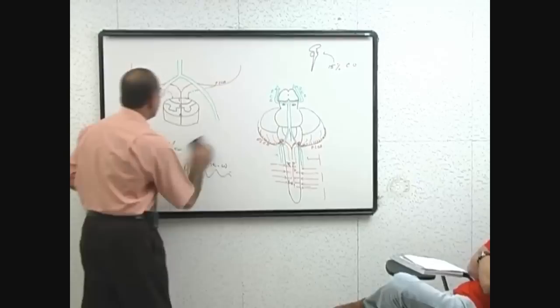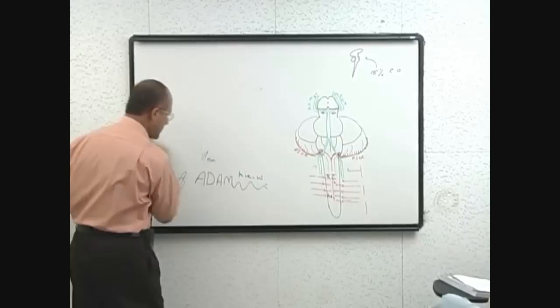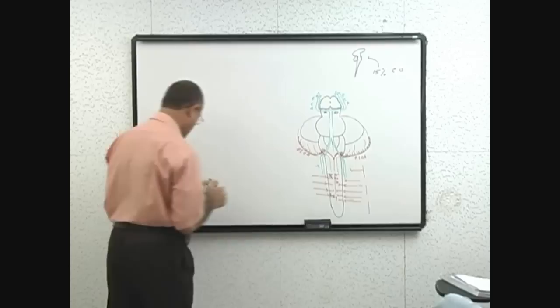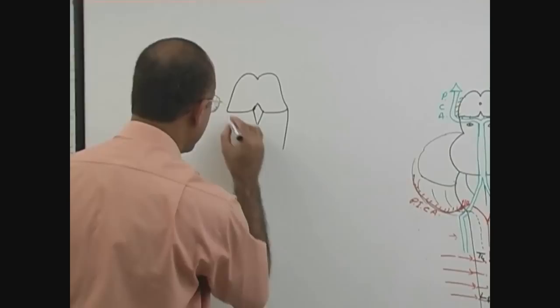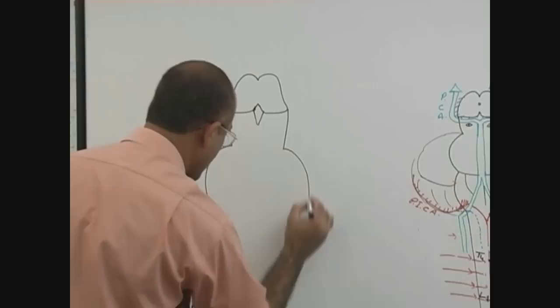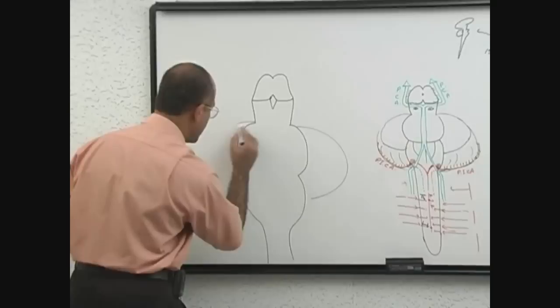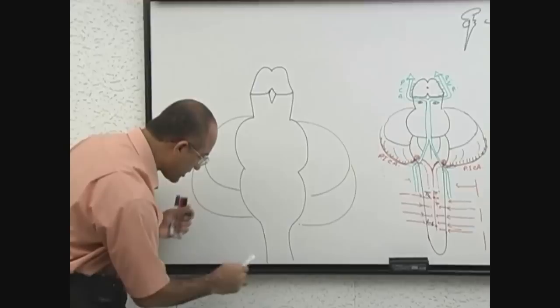Now we move upward, so we were talking about the vertebral basilar system. Let me make here again - please tell me what is it: midbrain, and here is your pons, and here is medulla, and cerebellum on the undersurface, right?